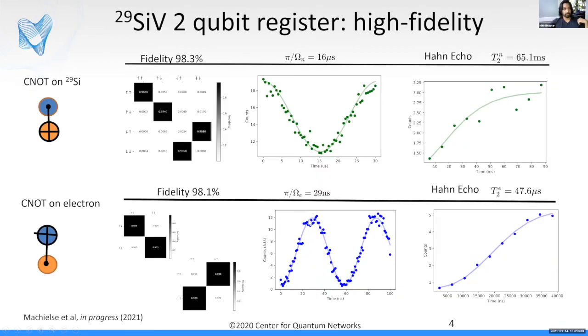The second development is getting our local control of small multi-qubit registers to work very well. Previously, people used color centers along with nearby nuclear spins in the environment that are stochastically detected and sensed. We've switched to using an isotope of silicon, silicon-29, which comes with a spin-1/2 system. We can now get very high fidelity two-qubit gates in reasonably fast operational times with still quite good overall coherence properties.